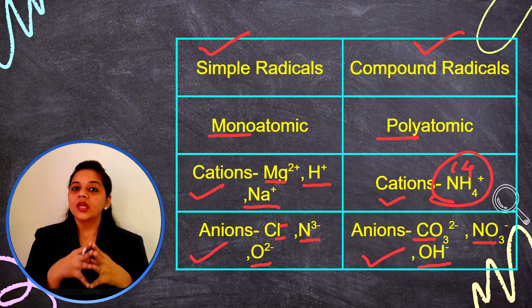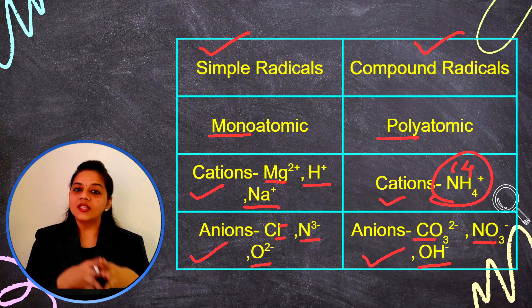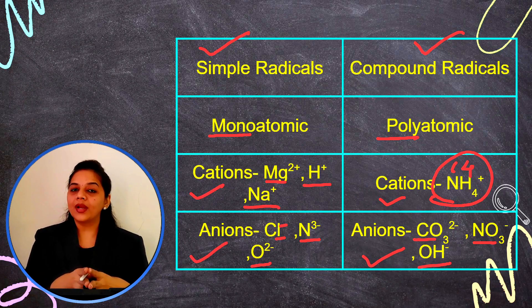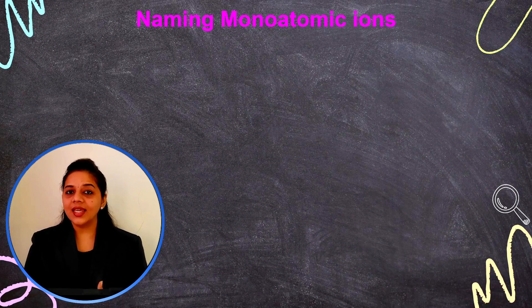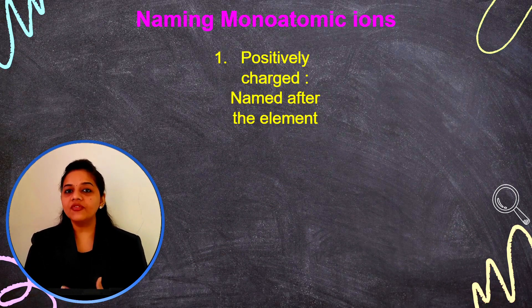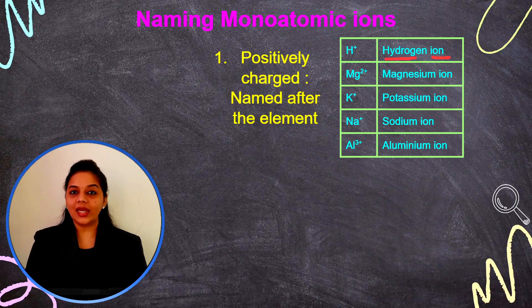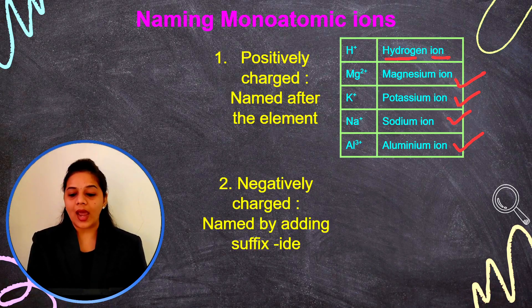Simple radicals have only one atom, so they are monoatomic, and compound radicals have multiple atoms, so they are polyatomic. Now let's look at the naming of monoatomic ions. If the ion carries a positive charge, we add the word 'ion' after the name of the element: hydrogen ion, magnesium ion, potassium ion, sodium ion, and aluminium ion. But if the radical is negatively charged, we add '-ide' as the suffix.